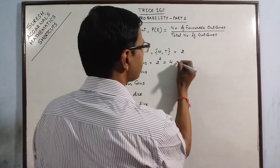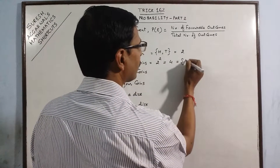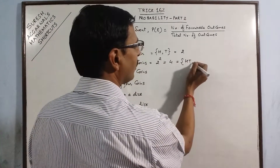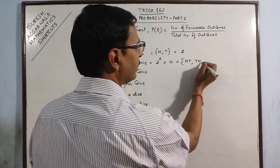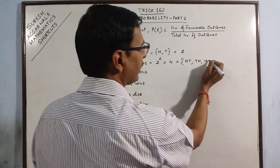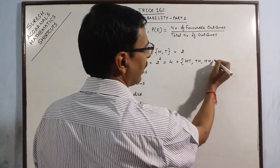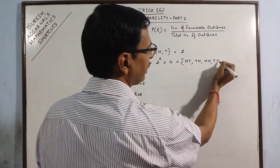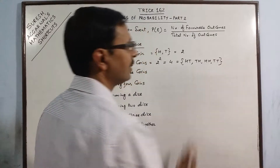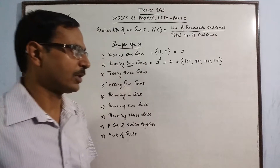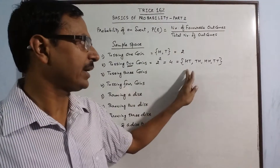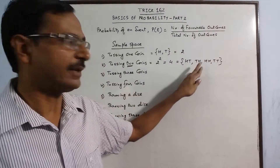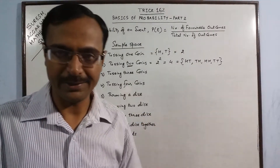What are those four outcomes? They are: head-head, head-tail, tail-head, and tail-tail. These are the four possible outcomes — both heads, both tails, one head one tail, and then tail-head.